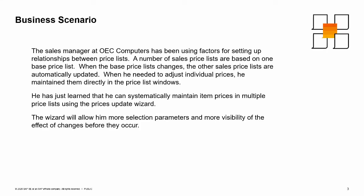The sales manager at OEC Computers has been using factors for setting up relationships between price lists. A number of sales price lists are based on one base price list. When the base price list changes, the other sales price lists are automatically updated. When he needed to adjust individual prices, he maintained them directly in the price list windows. He has just learned that he can systematically maintain item prices in multiple price lists using the prices update wizard, which allows more selection parameters and more visibility of the effect of changes before they occur.